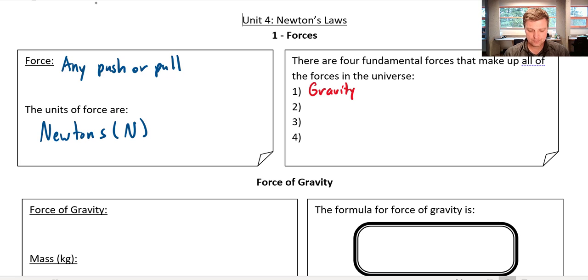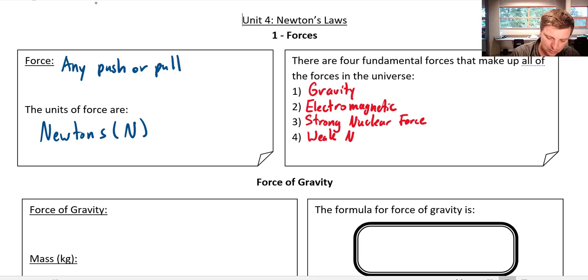So gravity is one force you need to have a universe. The next one which maybe you're somewhat familiar with would be the electromagnetic force. The third and fourth ones are ones you may not have heard before but they are the strong nuclear force and the weak nuclear force.